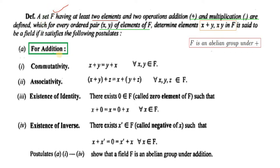Field میں جو addition والے properties ہیں، یہاں سے لے کر چار properties ہیں۔ اگر x, y دو elements ہوں F میں تو x plus y بھی F میں element ہوگا — یہ closure property ہے۔ ان پانچ properties کی وجہ سے ہم کہیں گے کہ set F ایک abelian group ہے under addition.